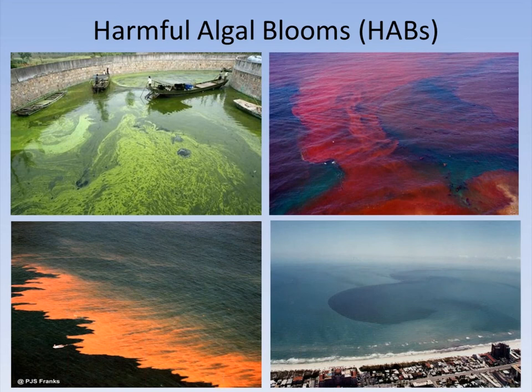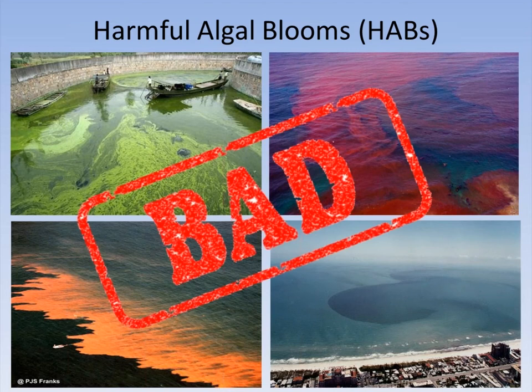About two or three percent of all marine microalgae species decided to become harmful — either because they produce potent neurotoxins, cause mechanical damage to the gills of fish, or cause water clarity issues. Every once in a while you get an algal bloom that produces one of these toxins or harmful effects, and that becomes a harmful algal bloom. These are bad events that cause a lot of problems for people, animals, economy, and tourism.